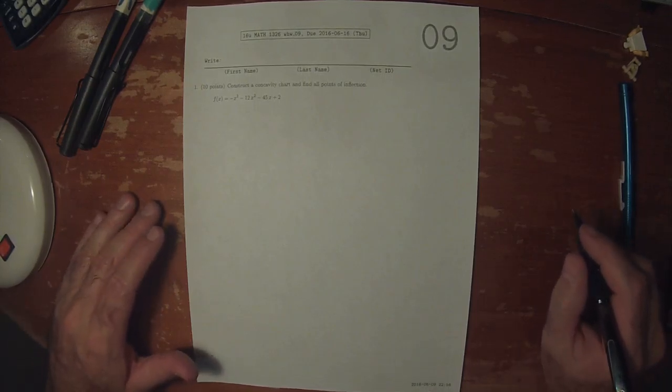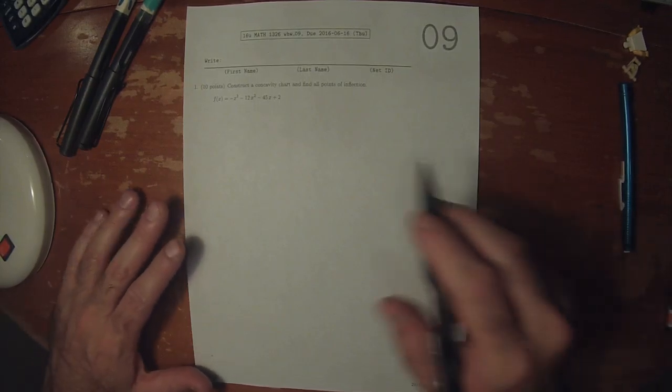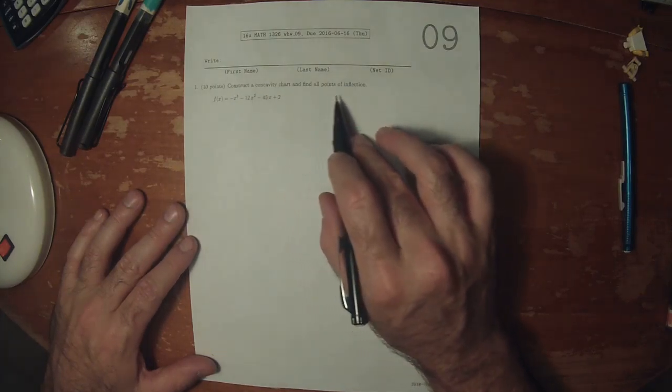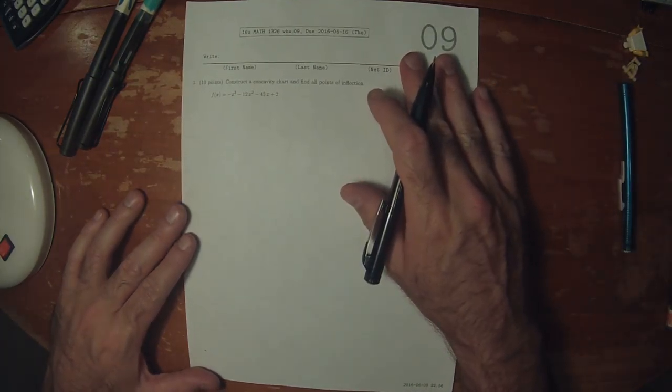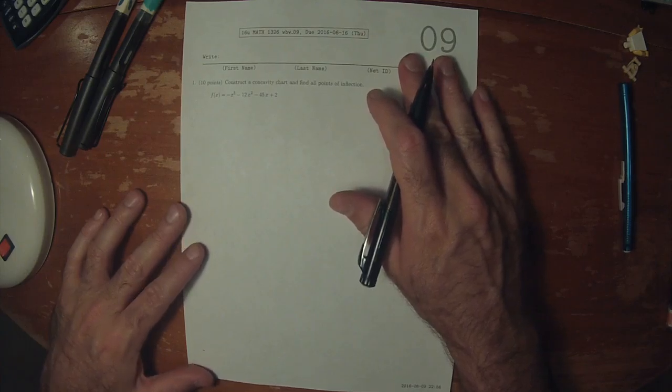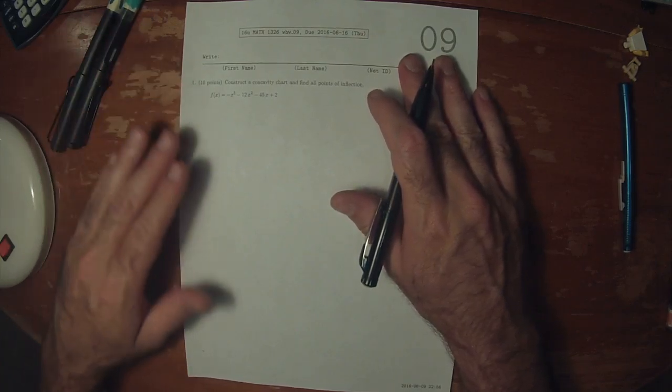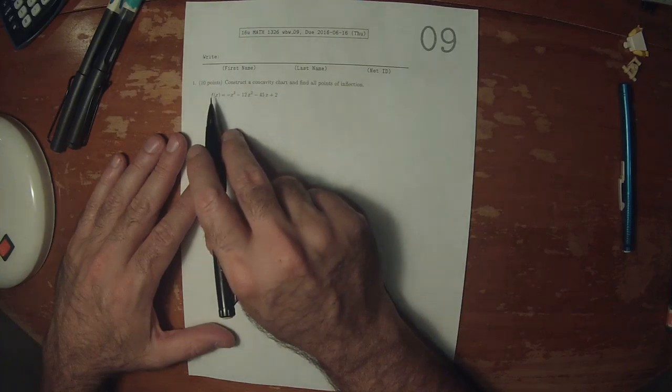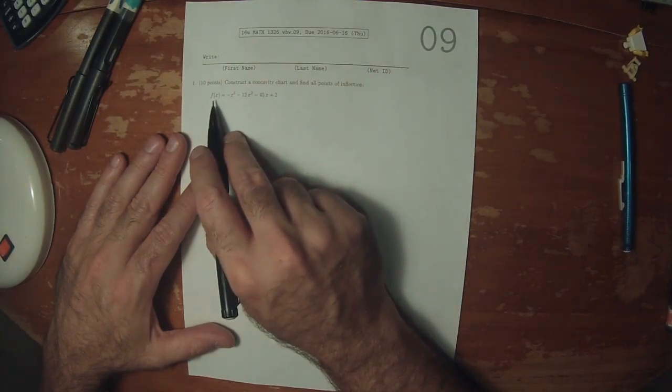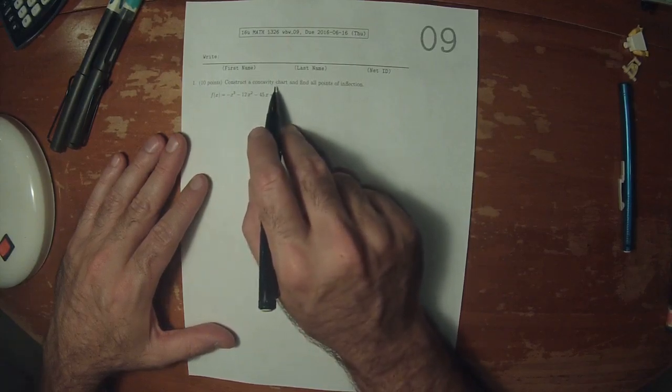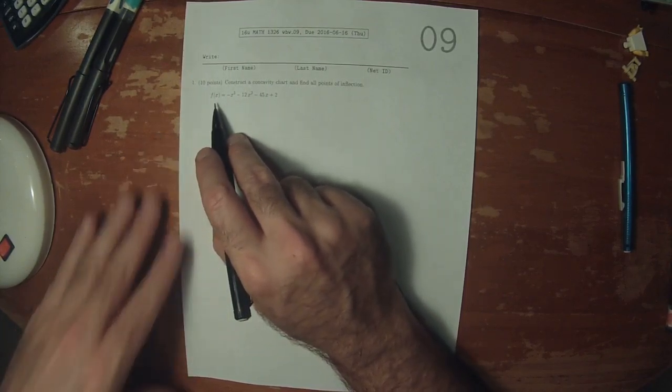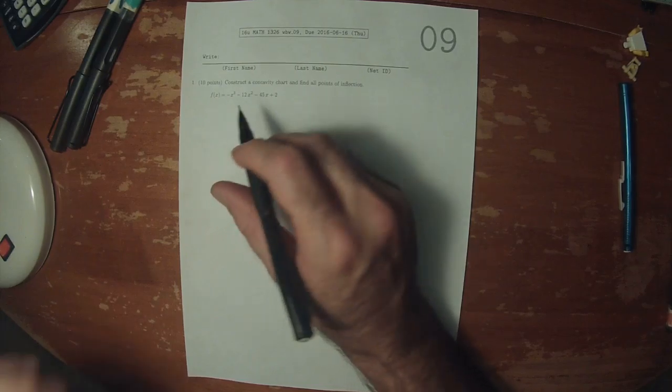This is the solution to take home quiz 9. It says, construct a concavity chart. A sign chart is finding the sign of the original function, a slope chart is finding the sign of the derivative, and a concavity chart is finding the sign of the second derivative.